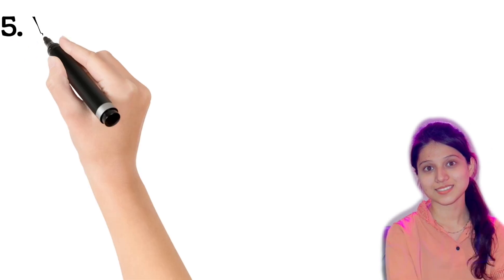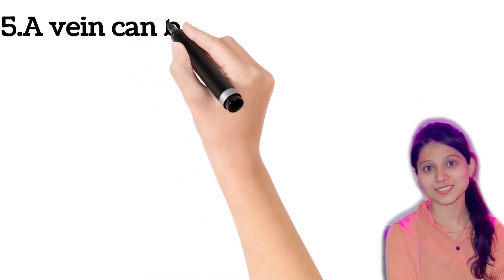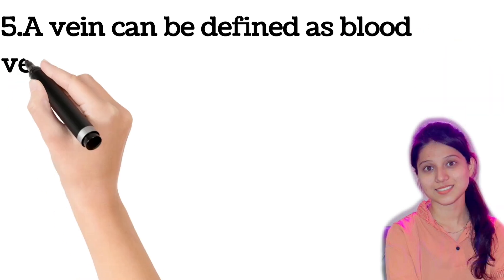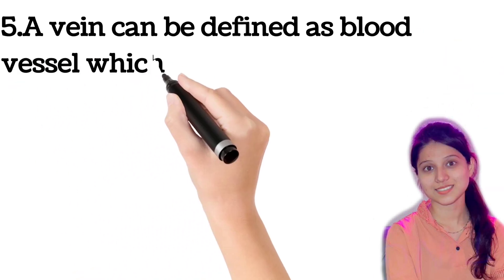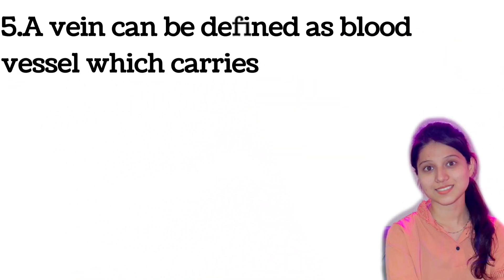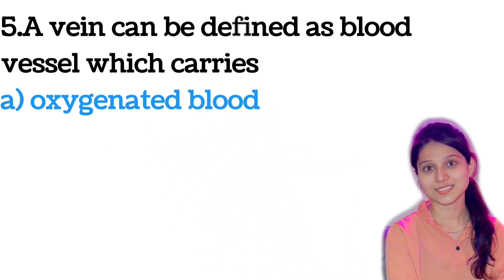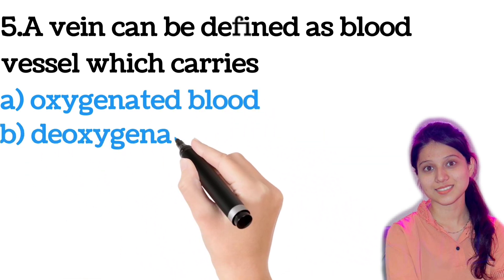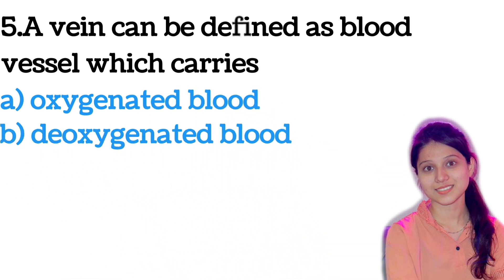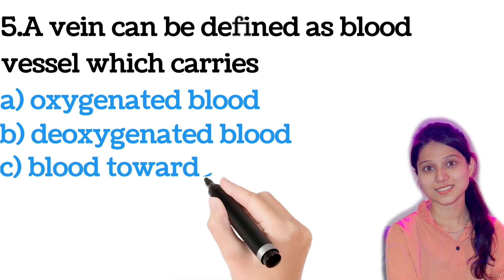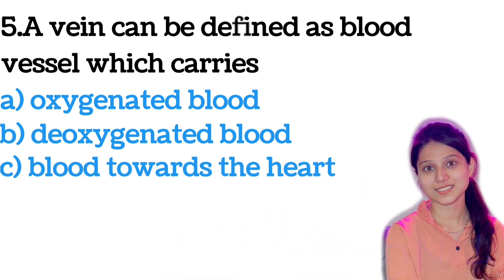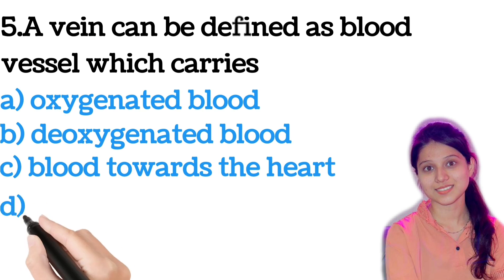Next question: a vein can be defined as a blood vessel which carries — options are: oxygenated blood, deoxygenated blood, blood towards the heart, or blood away from the heart. A vein carries blood towards the heart.